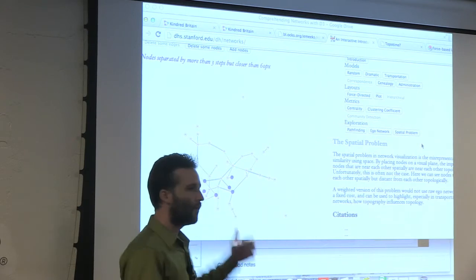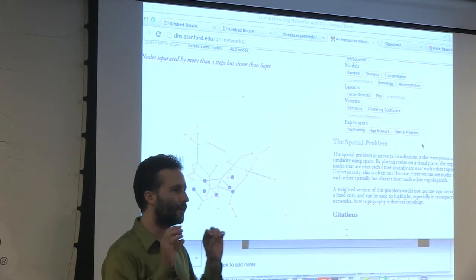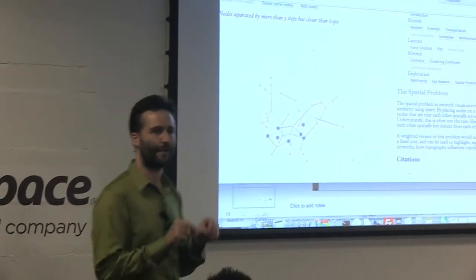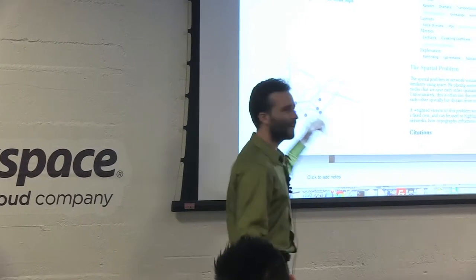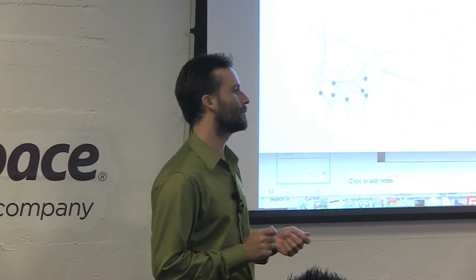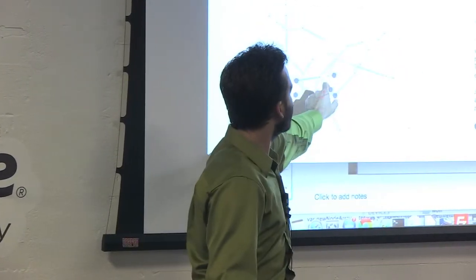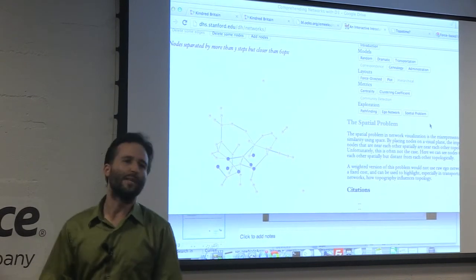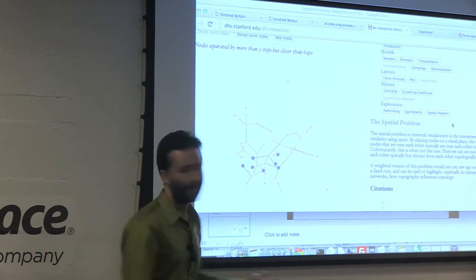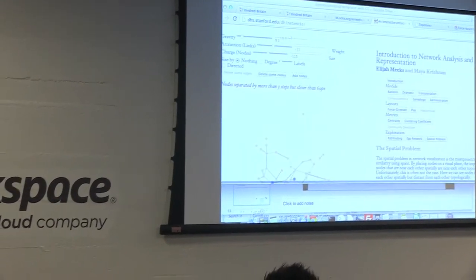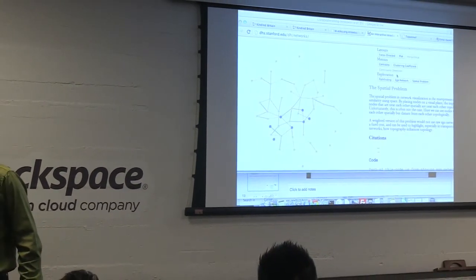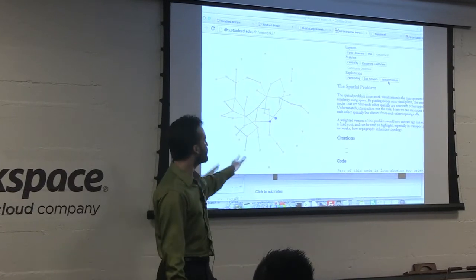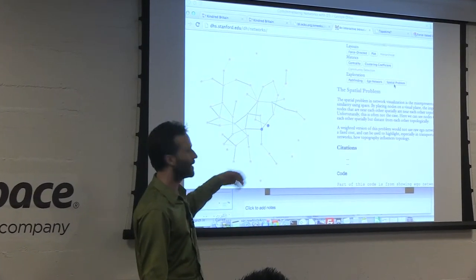This is what I refer to as the spatial problem. When you're representing a network, the problem with a hairball is that readers assume things that are next to each other are similar — the first principle of geography. But with a network, things that are near each other might be very far apart in terms of network distance. These blue nodes here are less than 60 pixels apart, but they're actually three or more steps from each other from a network perspective. Running simple on-the-fly pathfinding functions like Dijkstra or breadth-first search lets you at least educate your reader about problems in your network.